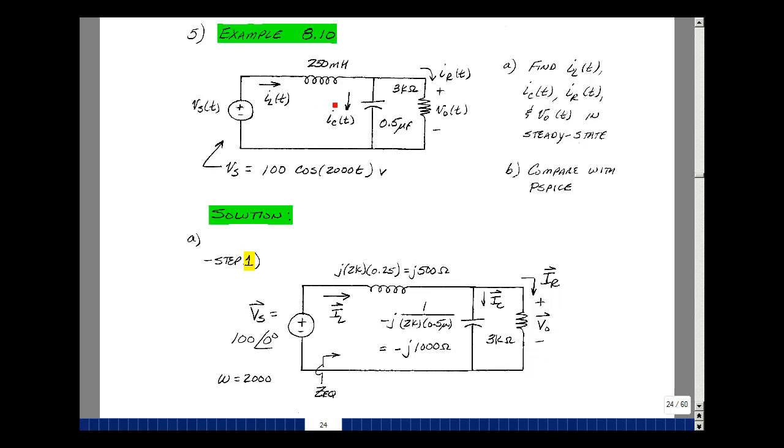The inductance becomes j omega L. So j 2000 times 0.25 Henrys gives me j 500 ohms. For the capacitor, I have a minus j over omega C. Omega is 2,000, C is 0.5 microfarads, and the reciprocal of that is minus j 1000 ohms. And then the 3K resistor is still the 3K resistor.